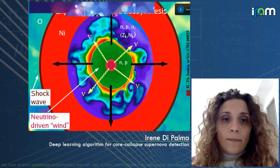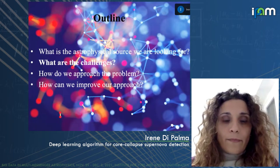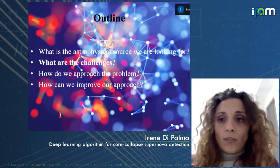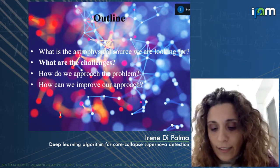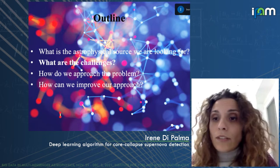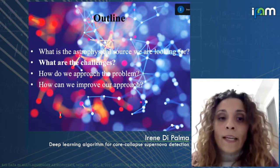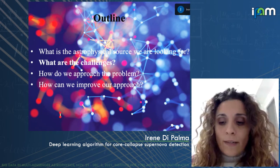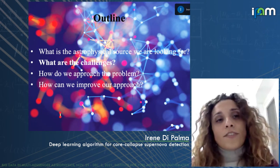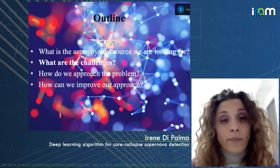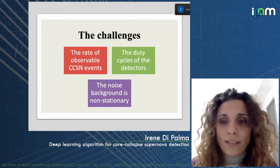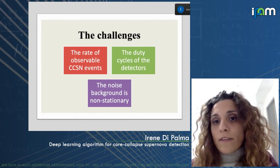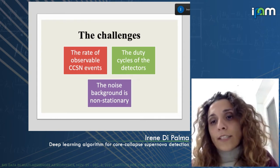There are three important challenges. One is due to the rate of observable core collapse supernova events, and the other two are related to the data: the duty cycles of the detectors and the noise background found in real data.